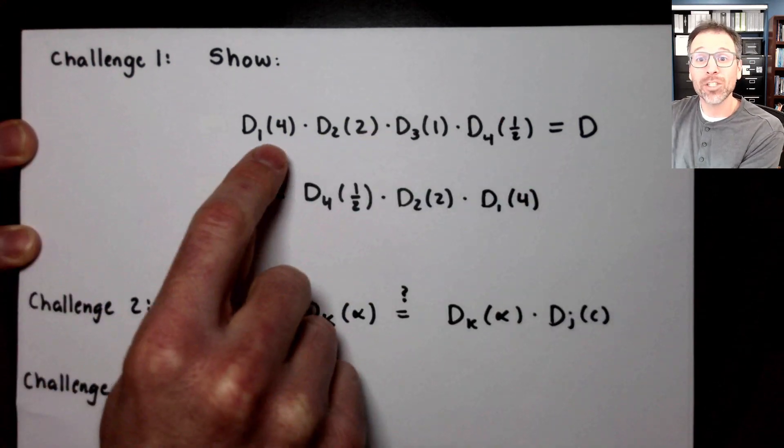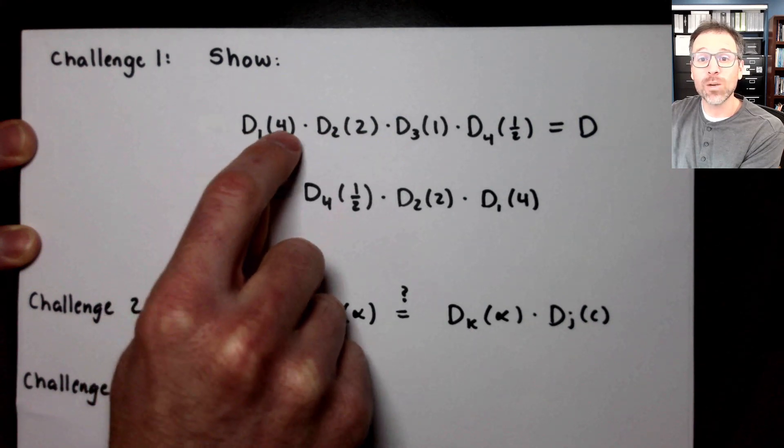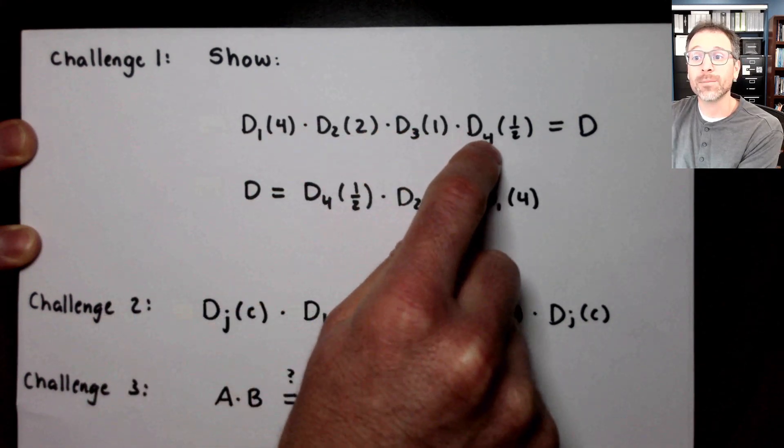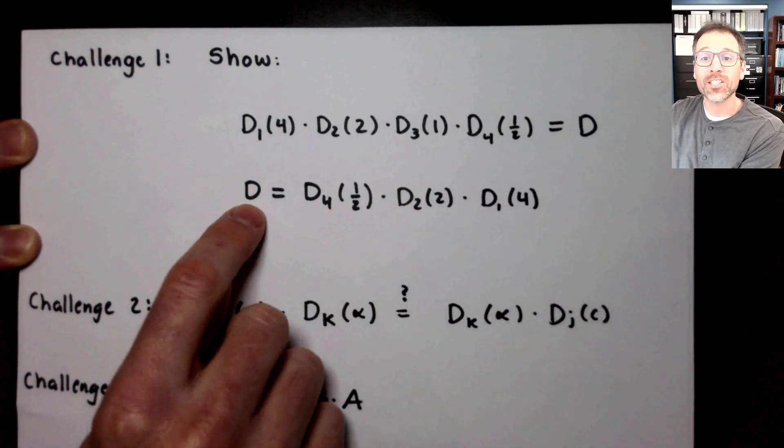We can do that in many different ways. We could first take D1 of four times D2 of two times D3 of one times D4 of one half, or we could switch the order.